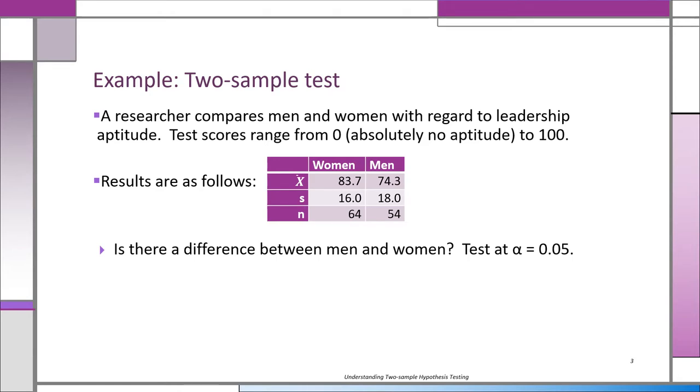Of course, we didn't look at all the women and men in the world. We took a sample of 64 women and 54 men. The difference is 9.4 points. We want to know: is this 9.4 difference significant or is it just a chance difference?